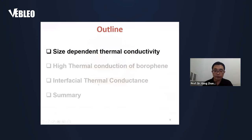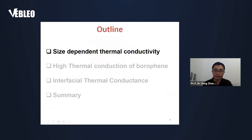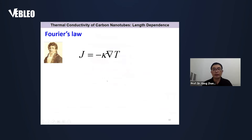And also, the interface thermal conductance. So in my talk today, first I will discuss about the size-dependent thermal conductivity in nanoscale materials. Then I will ask the question: can we have a 2D material with thermal conductance even higher than graphene? The answer involves a new 2D material. And the third topic is artificial thermal conductance control.